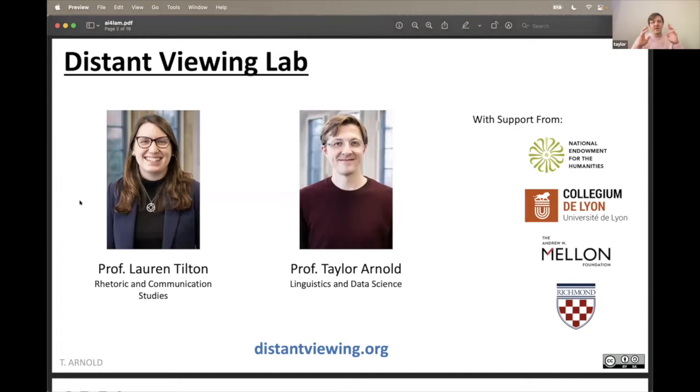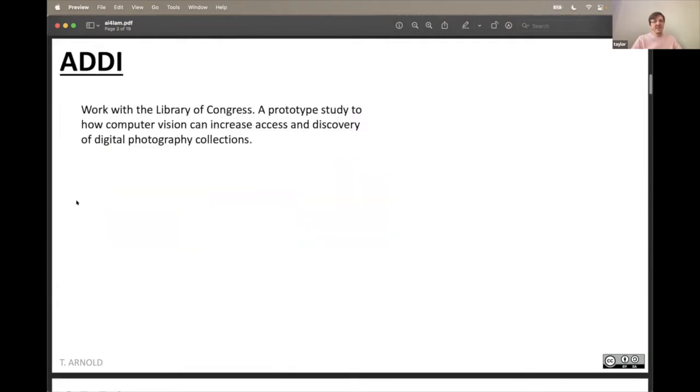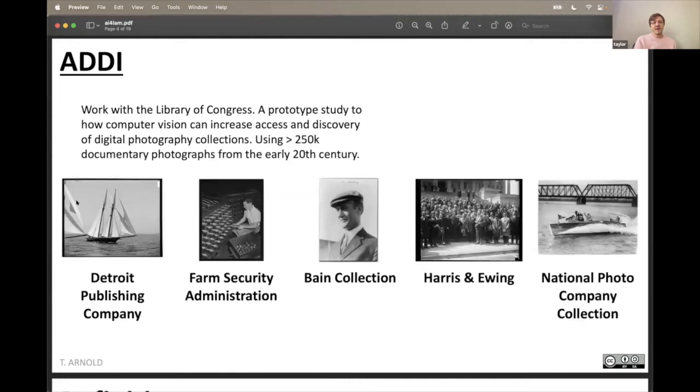This is a project that's part of the larger group that I founded and co-direct with my colleague Lauren Tilton called the Distant Viewing Lab at the University of Richmond, and we're broadly interested in how computational techniques can help us study visual culture. This is a project that we actually just wrapped up. We were working with and with funding from the Library of Congress.